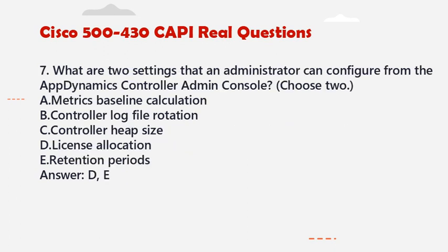Question 7: What are two settings that an administrator can configure from the AppDynamics controller admin console? Choose two. A. Metrics baseline calculation. B. Controller log file rotation. C. Controller heap size. D. License allocation. E. Retention periods. Answer: D, E.